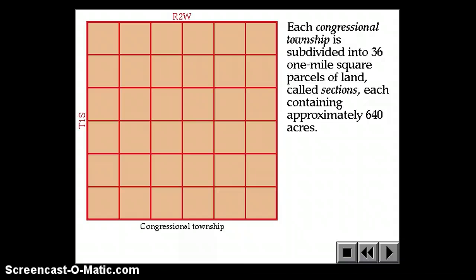Each congressional township is then subdivided into 36 one-square-mile parcels of land called sections. So this was six miles by six miles, and now each mile, we're going to draw another line. So you got six times six, you got 36 square miles inside of one congressional township. Each one-mile by one-mile block is 640 acres.